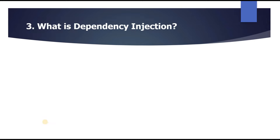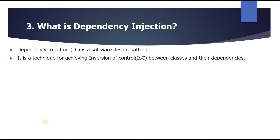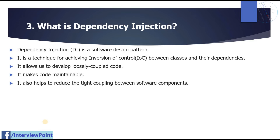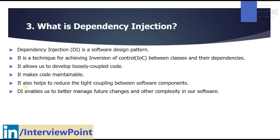The next question is: what is dependency injection? Dependency injection (DI) is a software design pattern — a technique for achieving Inversion of Control (IoC) between classes and their dependencies. It allows us to develop loosely coupled code, makes code maintainable, helps reduce tight coupling between software components, and enables us to better manage future changes and complexity in software development.